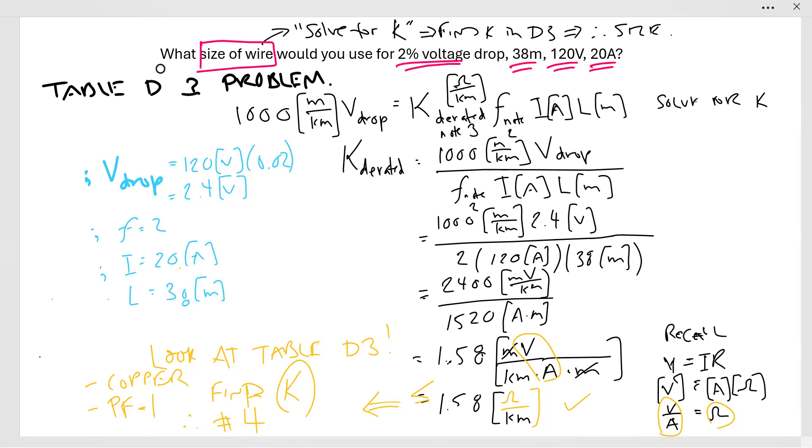Finding the size of wire when you know the voltage drop is not that difficult. We're just using table D3, which really has a governing equation. Keep your units, let them do your checking for you, and you should be good to go.